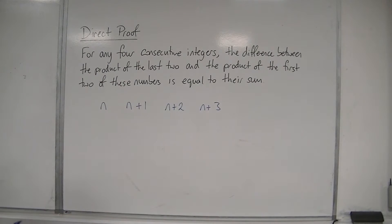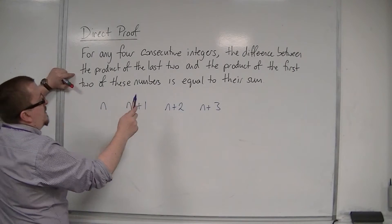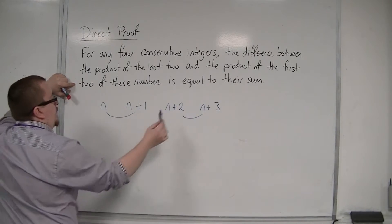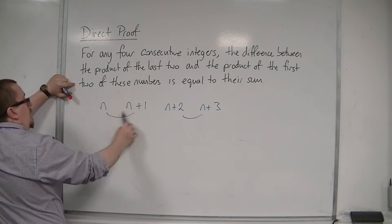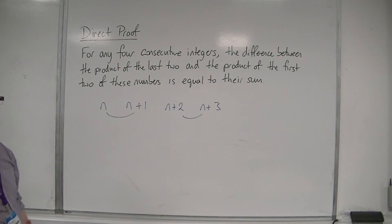Now what we're saying is that the difference between the product of the last two and the product of the first two, so we want to multiply these together, subtract these two multiplied together, and that is meant to be equal to their sum.